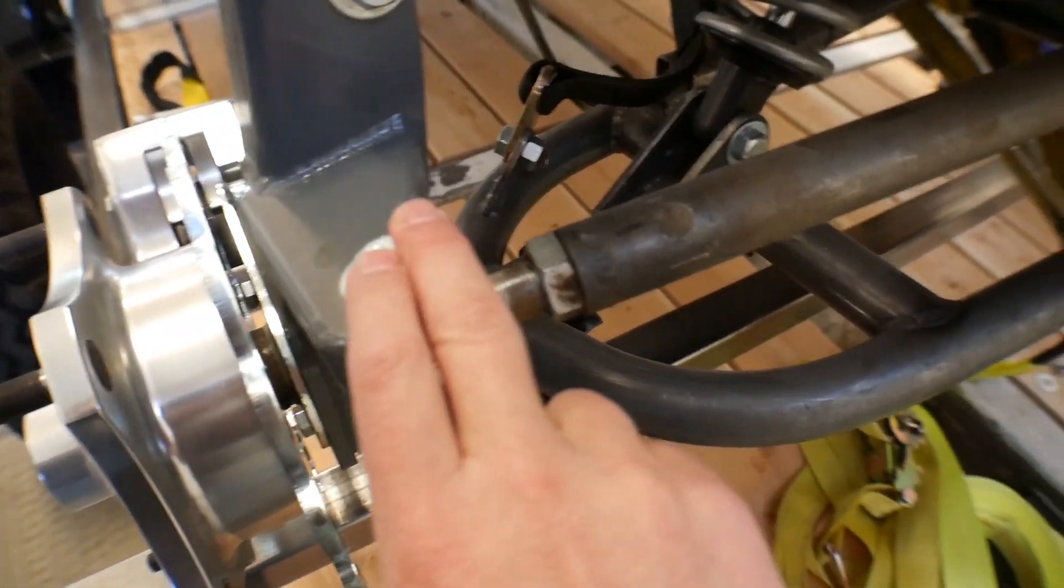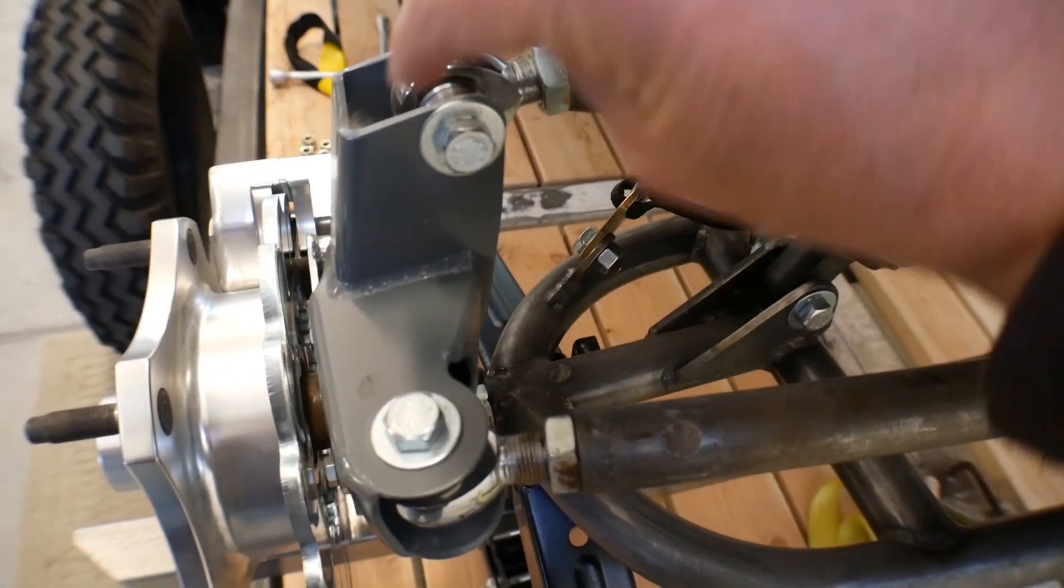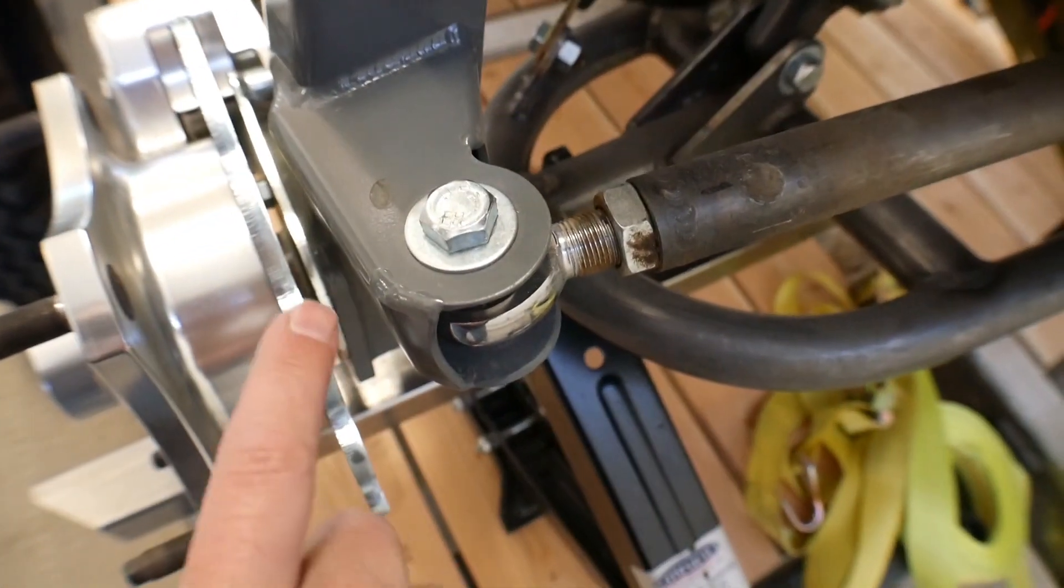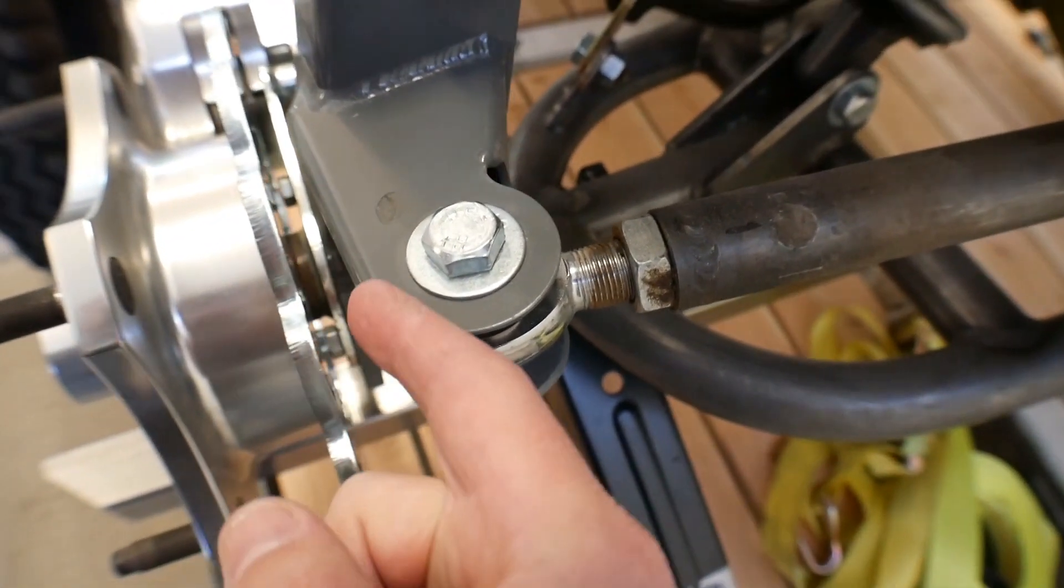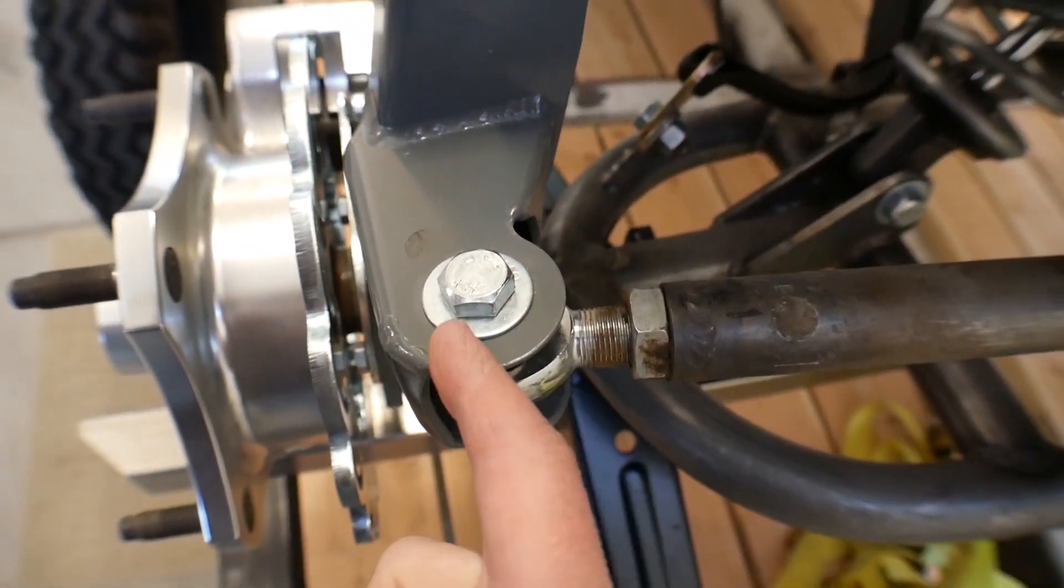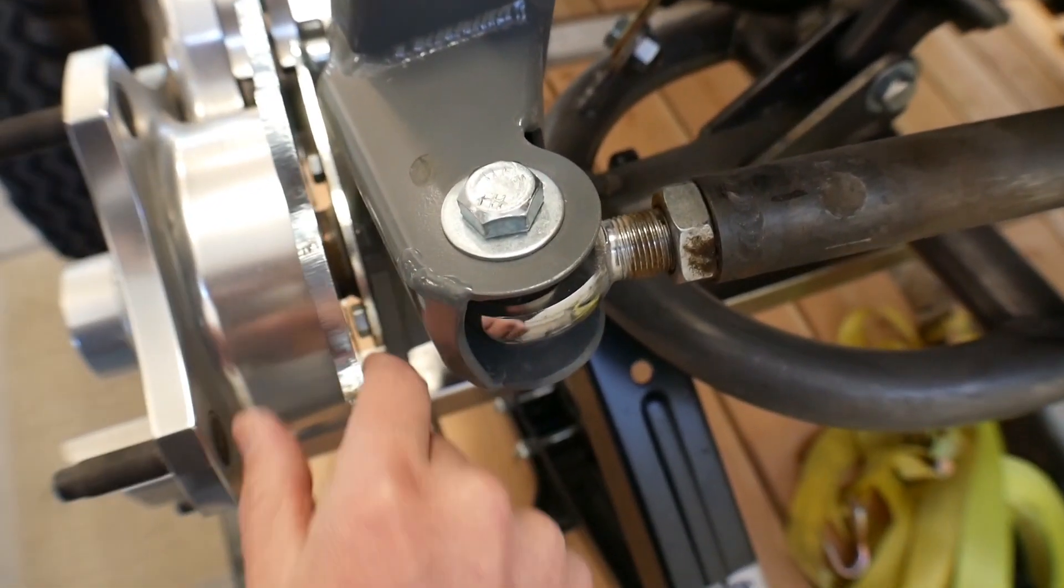And again, if we created a line through the ball joints through to the rear axle, the pivot point would have to be somewhere out here. Obviously, I didn't make this spindle. I bought this spindle. They've put it out here kind of as far as they can, but you can only go so far because you'll run into the brake rotor.